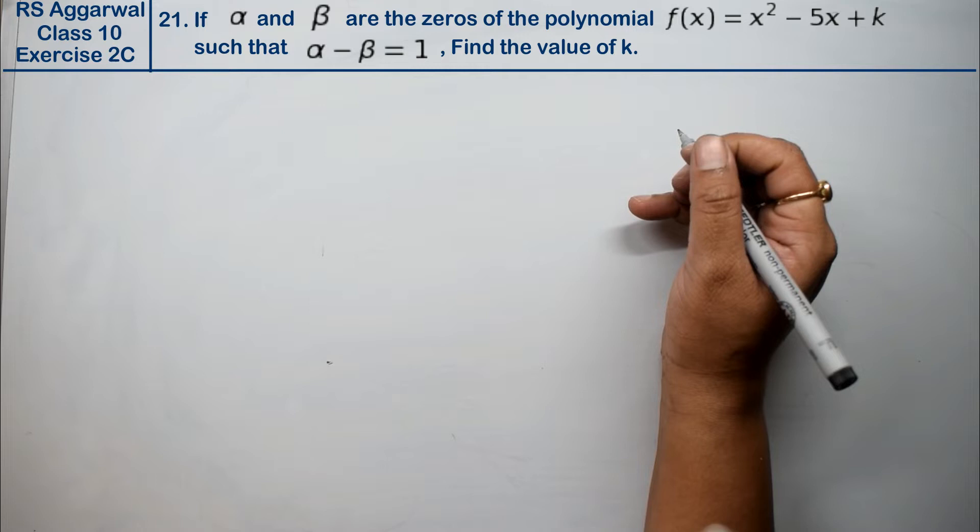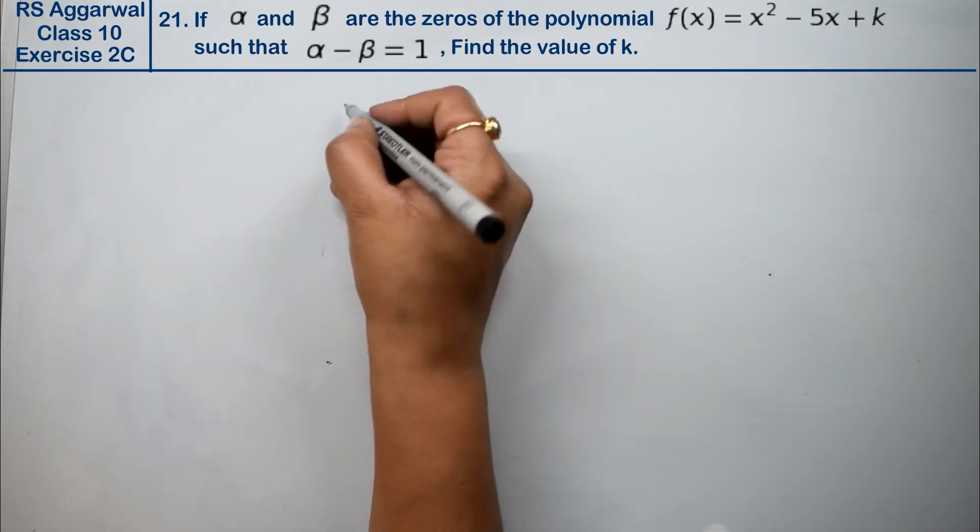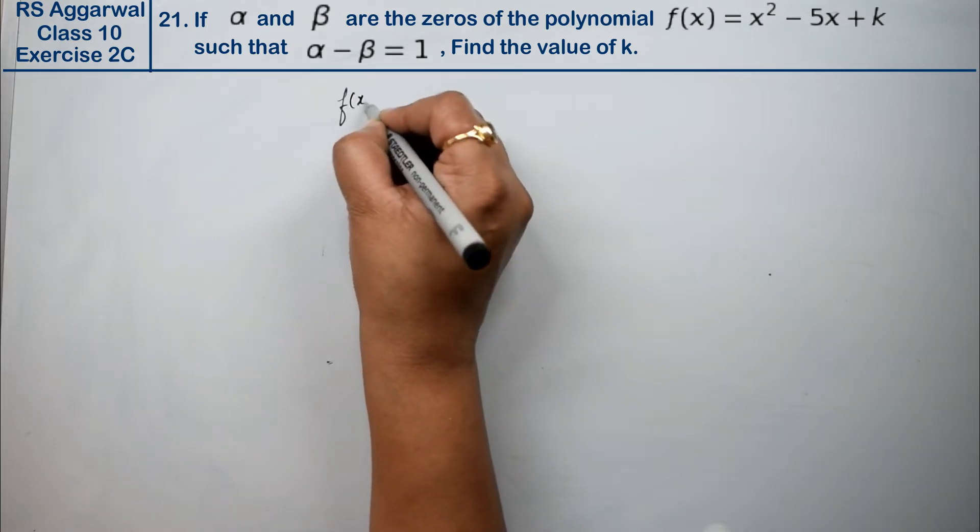Let's do question number 21 of exercise 2C, that is polynomial. Question number 21 is: if α and β are the zeros of the polynomial, which polynomial is it? f(x) is given as x² - 5x + k.